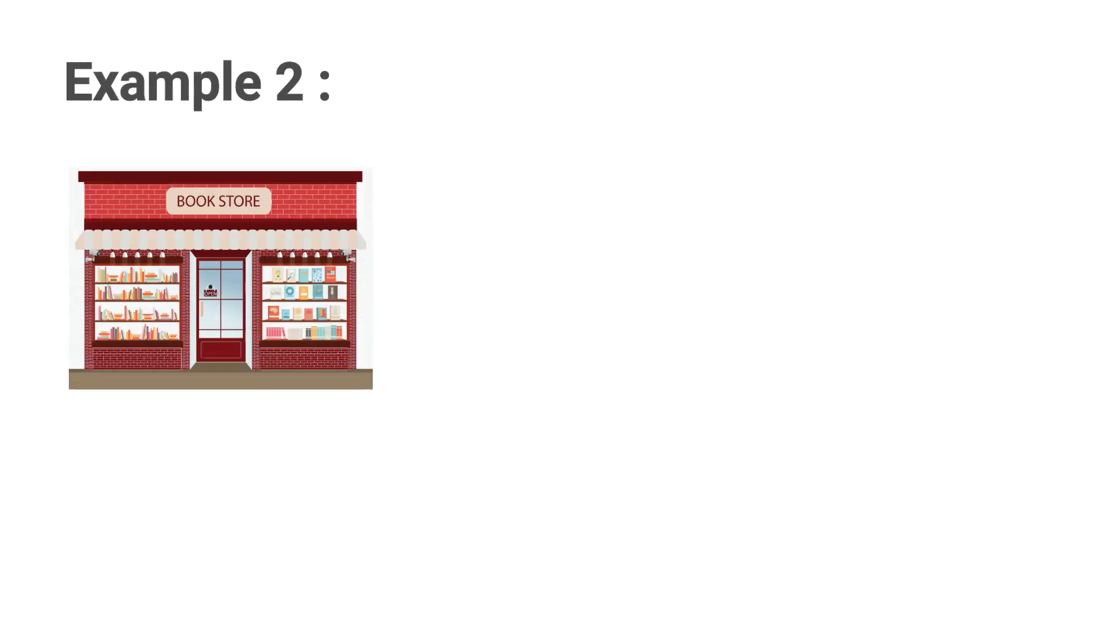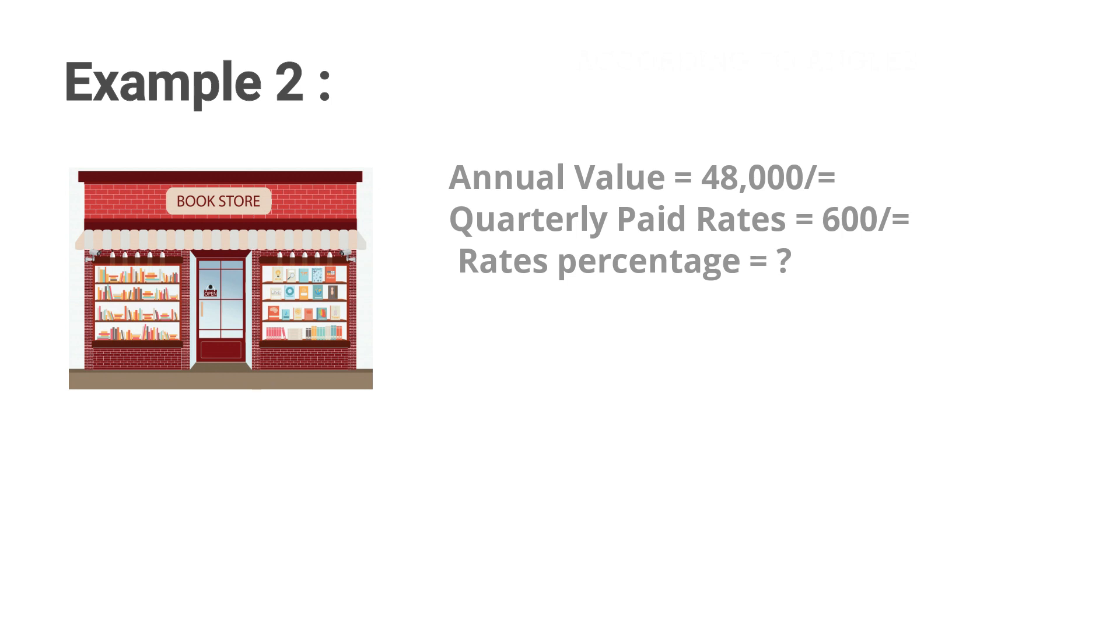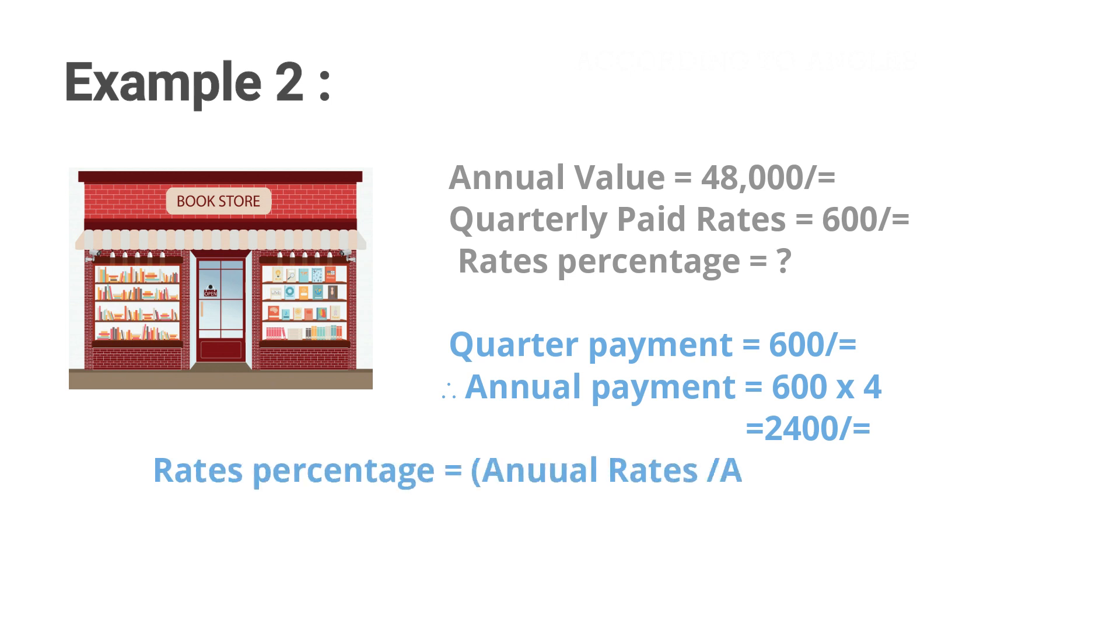Let's see another example. Annual value of a bookshop is 48,000 rupees. The quarterly payment is 600 rupees, and we are going to find the rates percentage. Quarterly payment is 600, that into 4 gives us the annual payment as 2,400 rupees. Then 2,400 rupees over 48,000 into 100 percent will give the rates percentage, that is 5 percent.